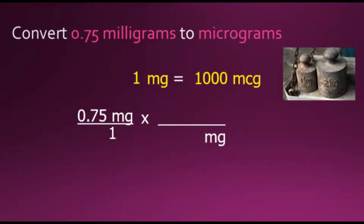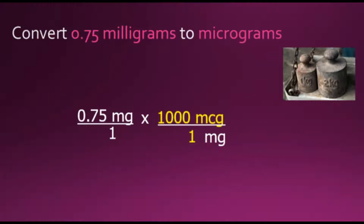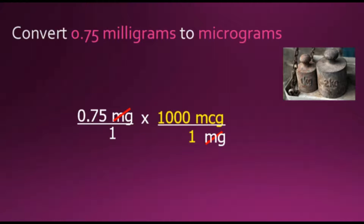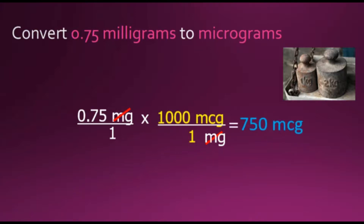We express this as a conversion factor fraction: 1 milligram in the denominator and its equivalent value of 1000 micrograms in the numerator. This fraction has a value of 1 because the numerator and denominator are equivalent. When multiplying, we cancel out the common factor of milligram over milligram, which equals 1. Multiplying numerators together gives us 750 in the numerator and 1 in the denominator. Division by 1 does not change the value, giving us a final answer of 750 micrograms.